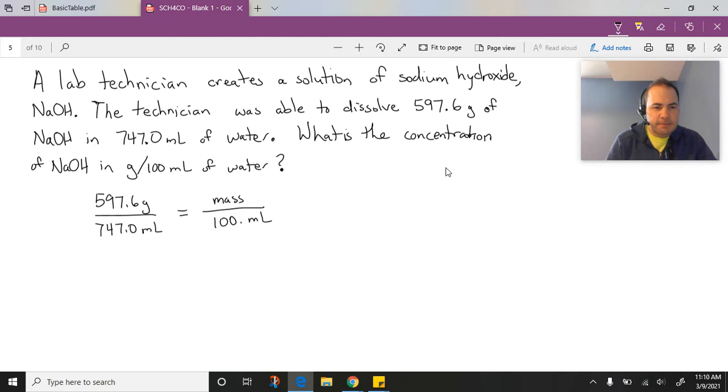So I'm going to cross multiply the 100 mils. Because it's division being divided on this side, when I take it to the other side it becomes multiplication. So I'm going to have 597.6 grams times 100 mils divided by 747.0 mils, and that's going to equal the mass that we're dealing with here.